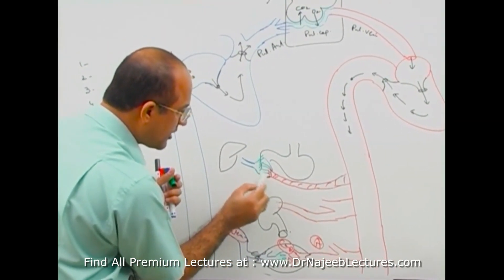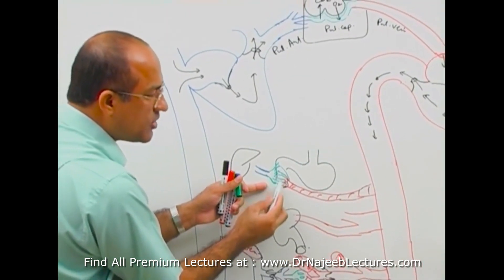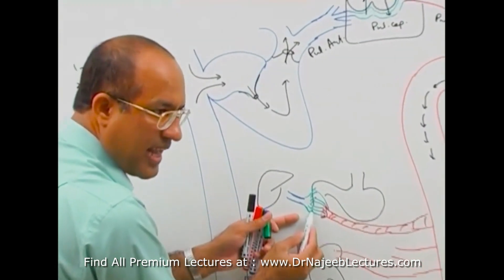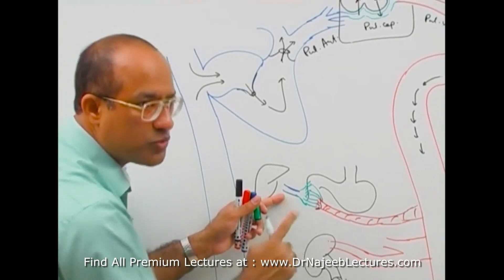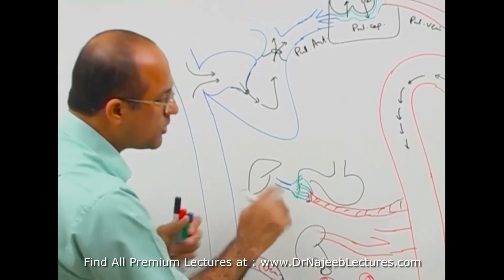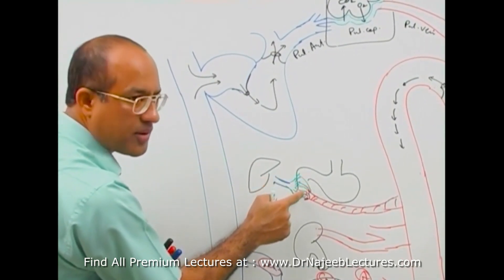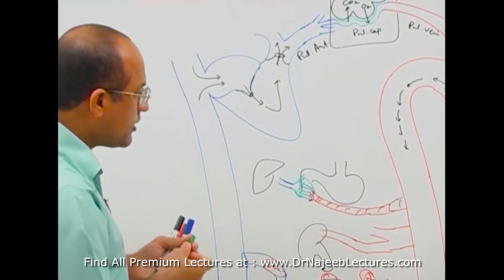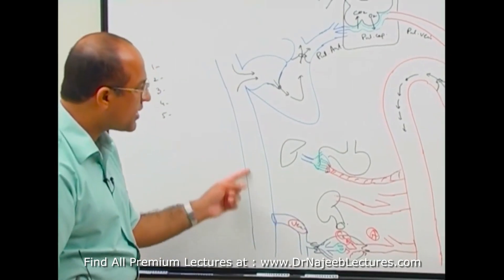Up to this point, it looks like the normal system: the arterial system brings the blood, within the GIT it breaks down into a capillary system, and the capillary system reunites to make a venous system. Of course, the reason there are capillaries here is that from the GIT they absorb glucose, amino acids, and other nutrients. Normally, veins should progressively join larger veins and then the vena cava.